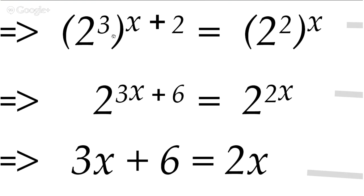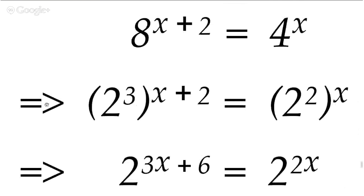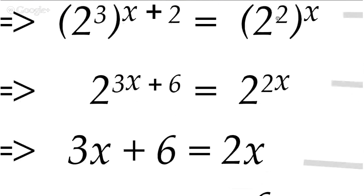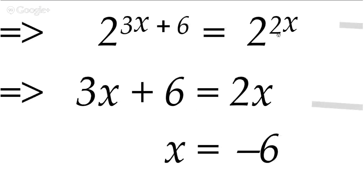That's using the power of a power rule which we talked about earlier on. On the other side you've got two times x as well, because there's a power of a power situation there too. Now we've got to the very important bit: if the bases are the same — the base over here is two, the base over there is two — then the powers must be the same, because that's the only way this can equal that. You can't say two to the power of five equals two to the power of three; it doesn't make sense. So this power must equal this power, meaning three x plus six equals two x.